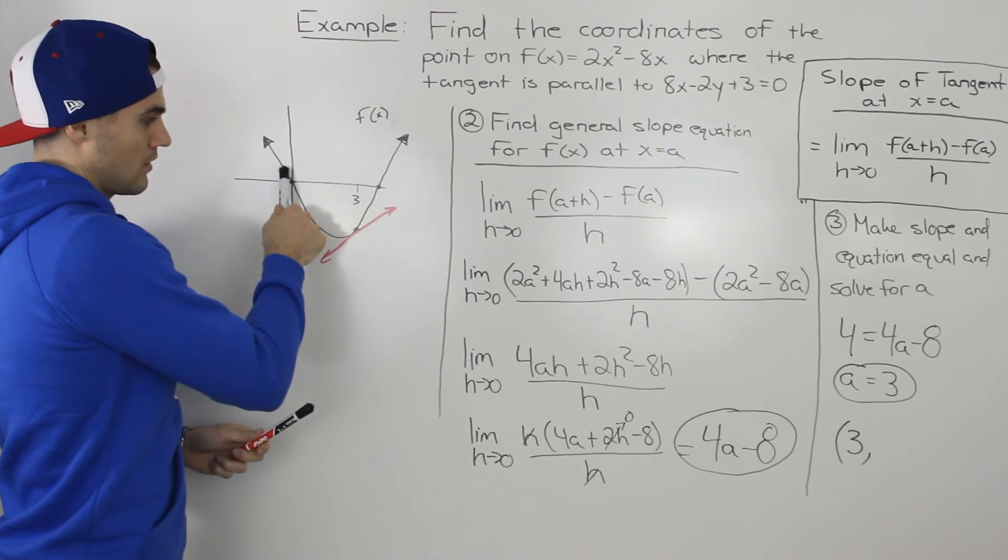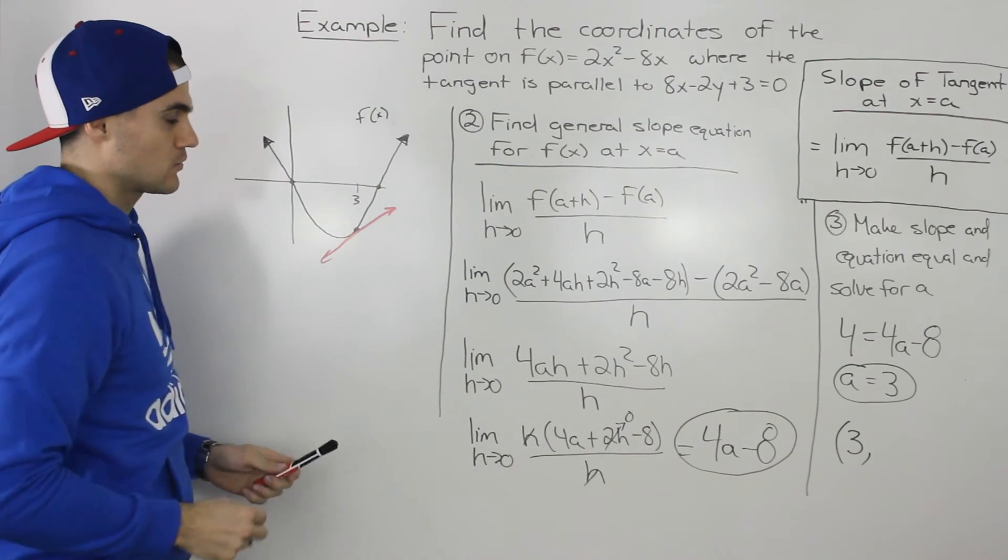So we know that at an x value of 3, this function, or the slope of the tangent on this function, is going to equal 4.